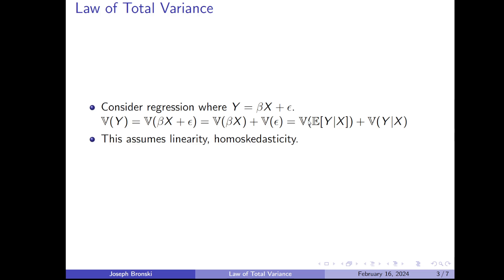So that's just the variance of the expectation function — basically just the line — plus the variance of the error around the line, which can also be thought of as the variance of Y given X. So when you know X, Y has a lesser variance.